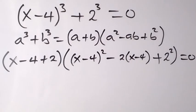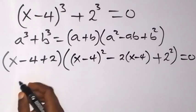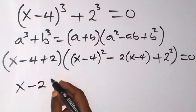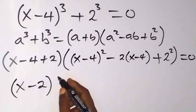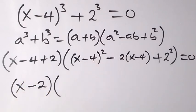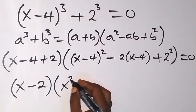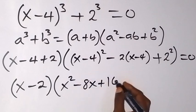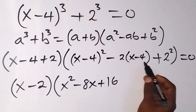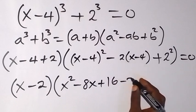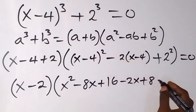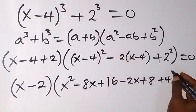Simplifying further, the first bracket gives us x minus 2, since minus 4 plus 2 is minus 2. Expanding the second bracket: (x minus 4) squared gives x squared minus 8x plus 16, and minus 2 times (x minus 4) gives minus 2x plus 8, then plus 4 for 2 squared. This all equals zero.